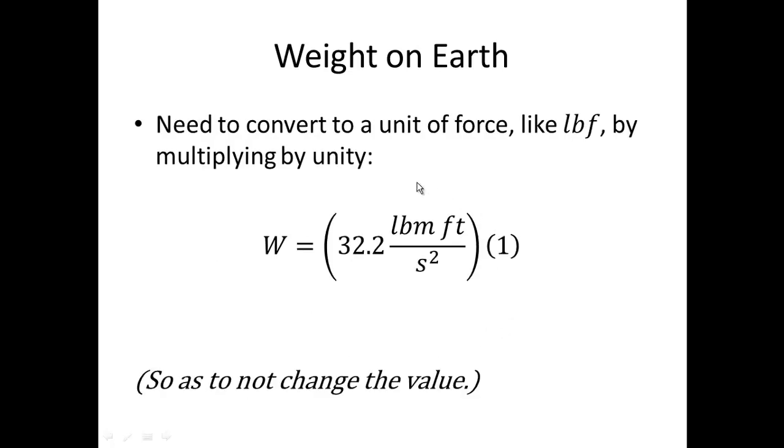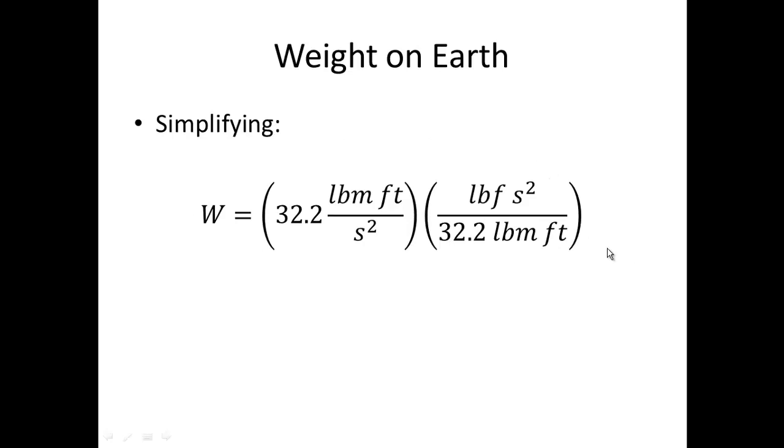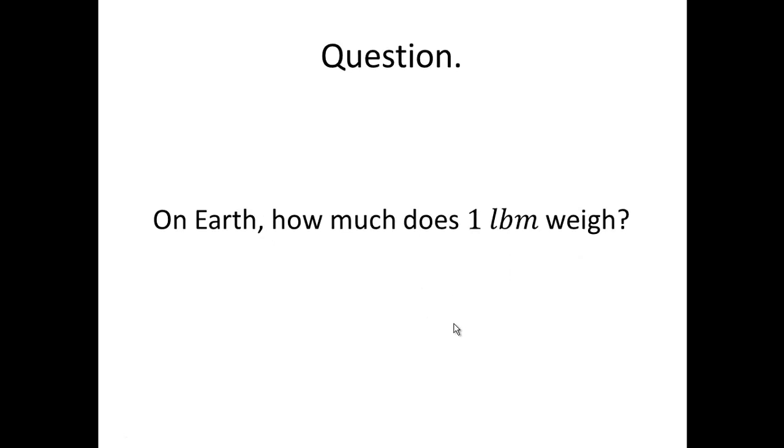We need to again convert. We need to convert to a unit of force like pound force by multiplying by unity, which means in this case dividing by g sub c again. Then simplifying, canceling units, pound mass, feet, second squared, leaving only pound force as the unit. So it equals 1 pound force. Question: on Earth how much does 1 pound mass weigh? Answer: 1 pound force.